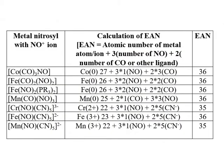Now let's start with some examples where NO acts as NO+ in form. In the first case, cobalt is in the zero oxidation state. When NO+ is added, it acts as a 3-electron donor — so 1 nitrosyl contributes 3 electrons. Cobalt in zero oxidation state contributes 9 electrons.